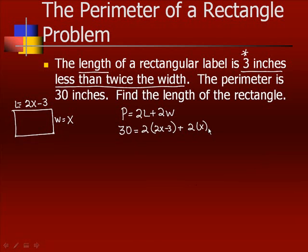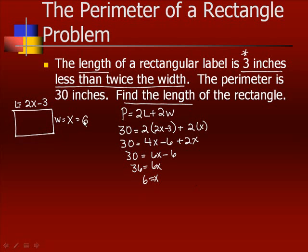So our equation becomes 30 equals 2 times 2x minus 3 plus 2x. Distributing the 2 gives us 4x minus 6 plus 2x. Combining like terms gives us 6x minus 6. Add 6 to both sides gives us 36 equals 6x, which means that x is going to be 6. Now keep in mind, that's not our solution. That's not the answer because it says find the length. Well, x, if you'll remember, was the width. The length is 2 times that minus 3, which is 12 minus 3, so the length is 9.